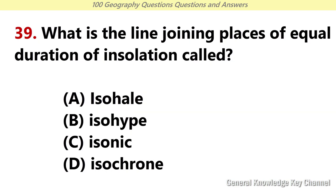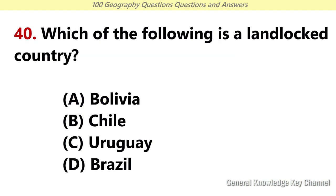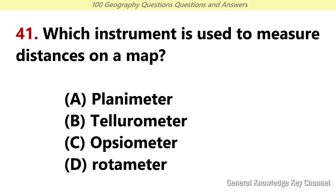What is the line joining places of equal duration of insolation called? Answer A: Isohel. Which of the following is a landlocked country? Answer A: Bolivia. Which instrument is used to measure distance on a map? Answer C: Oxiometer.